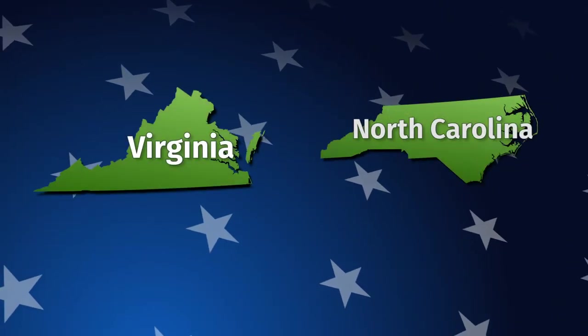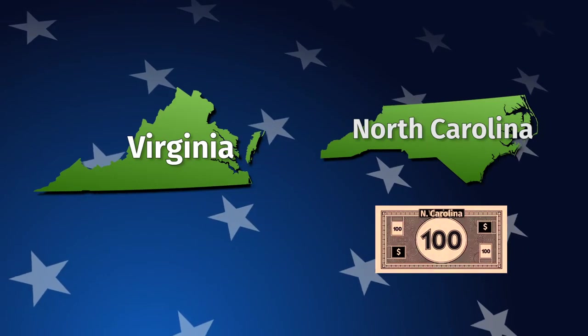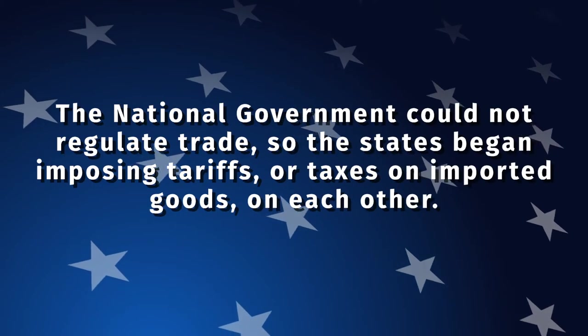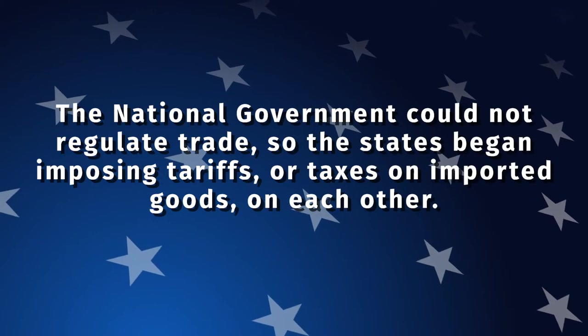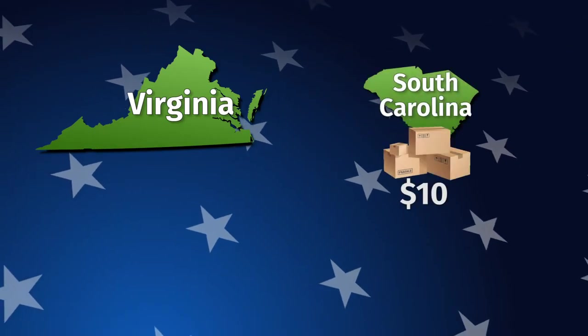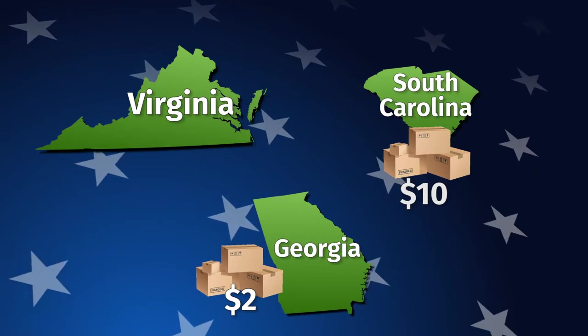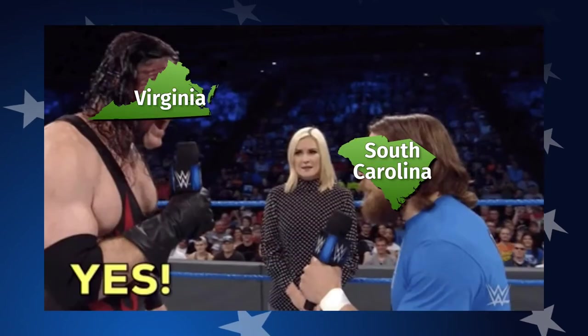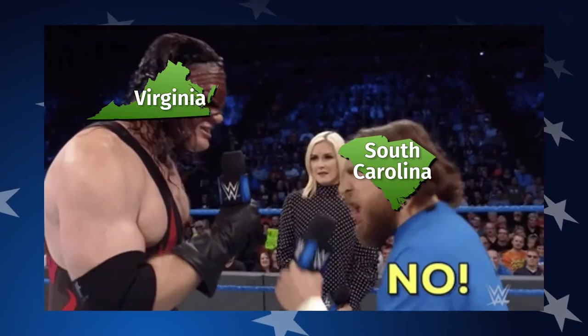There was no way to enforce national laws, so even though there was a national currency, the states started printing their own money anyway. If someone was traveling from Virginia to North Carolina, they would have to trade their Virginia dollars for North Carolina dollars. The national government also could not regulate trade, so the states began imposing tariffs — taxes on imported goods — on each other. This means Virginia could put a higher tax on goods coming from South Carolina than from Georgia, causing major disagreements between states in Congress.